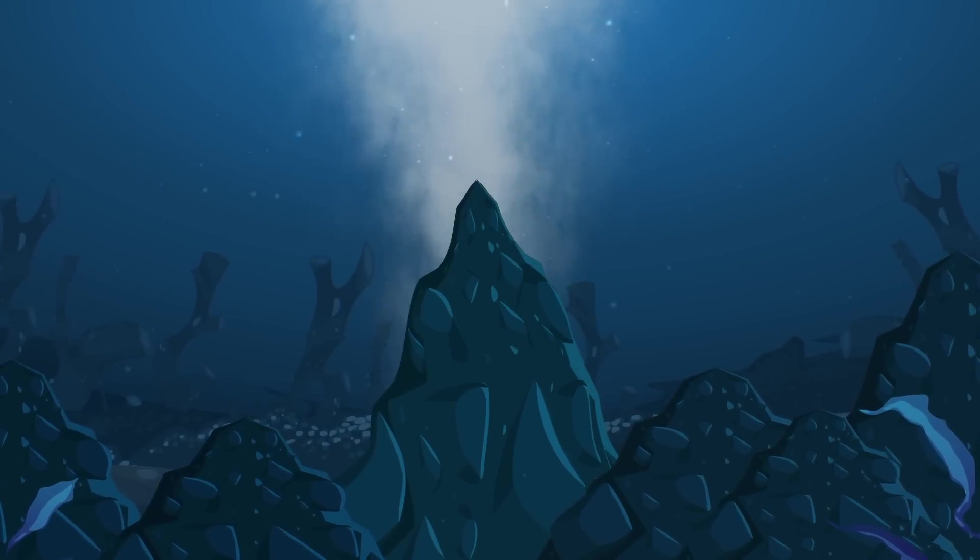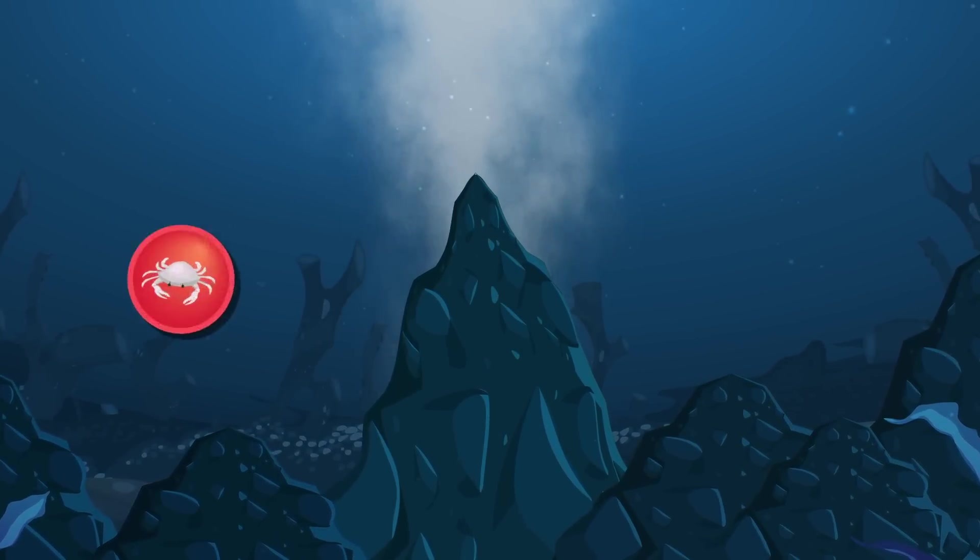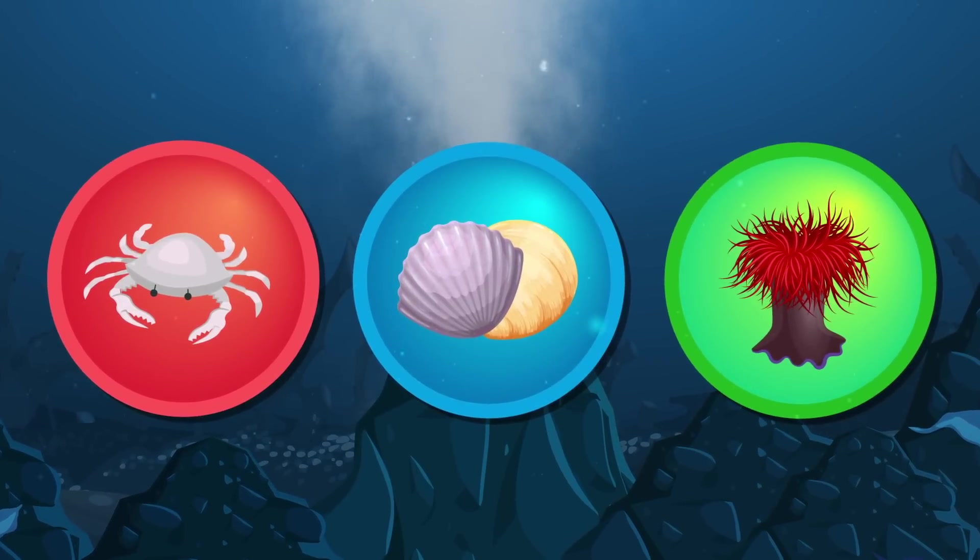Around deep-sea vents, chemosynthetic microbes grow in sprawling mats, which sustain other organisms like vent crabs, bivalves, and colonies of giant tube worms.